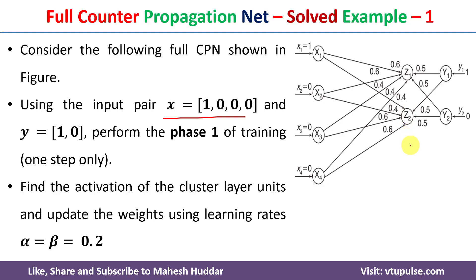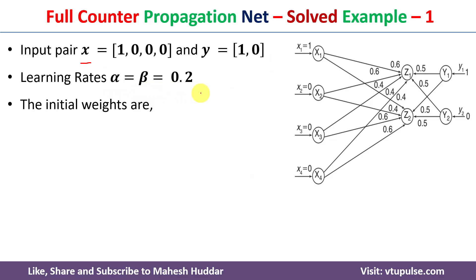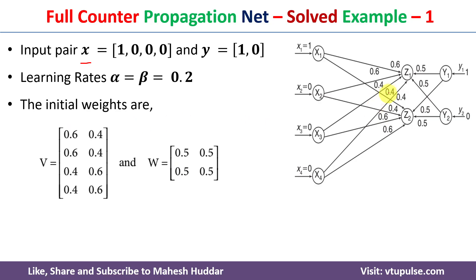We need to find the activation of the cluster units using learning rate alpha equal to beta equal to 0.2. The input pair x is equal to 1 0 0 0 and y is equal to 1 0. The initial weights are also given in the figure. The initial weights between input x and cluster unit z1 are 0.6, 0.4, 0.4. For z2 the weights are 0.4, 0.4, 0.6, 0.6. The weights between input y and the cluster units are 0.5, 0.5 for z1 and 0.5, 0.5 for z2.